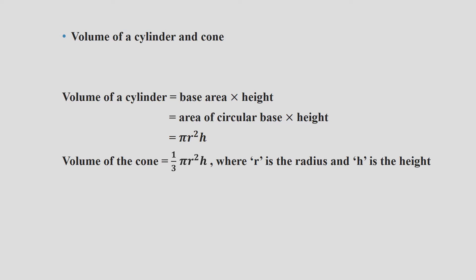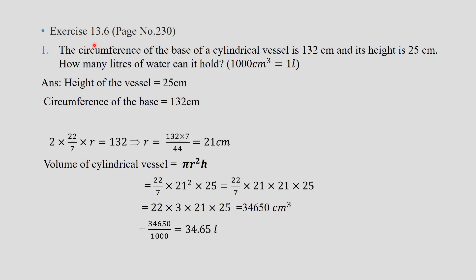Exercise 13.6, page number 230, Question 1: The circumference of the base of a cylindrical vessel is 132 centimeters and its height is 25 centimeters. How many liters of water can it hold? We are given that 1000 centimeter cube equals 1 liter, because our answer must be in liters. When we find the volume, the unit will be in centimeter cube, and we have to convert it into liters. Height equals 25 cm and circumference of the base is 132 cm.